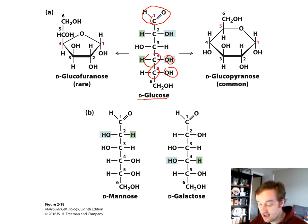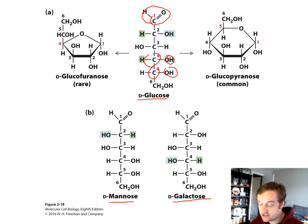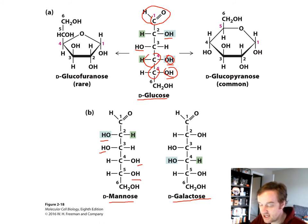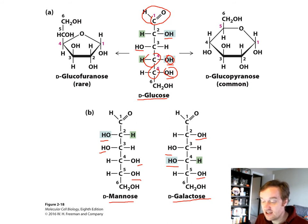What differentiates D-mannose and D-galactose from D-glucose is the location of the H and OH hydroxyl groups. In glucose, the OH on C2 is on the right, C3 on the left, C4 right, C5 right. In mannose: left, left, right, right. In galactose: left, right, left, right. These are stereochemical carbon differences in these sugars.